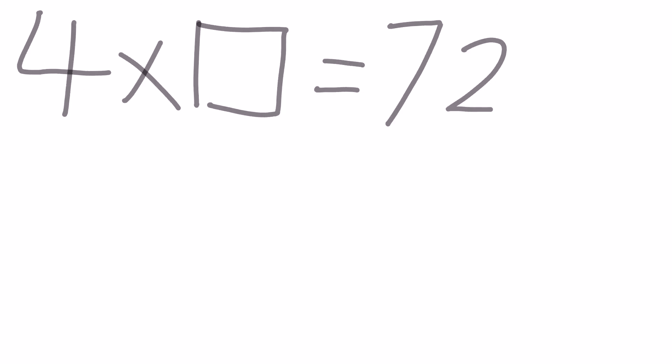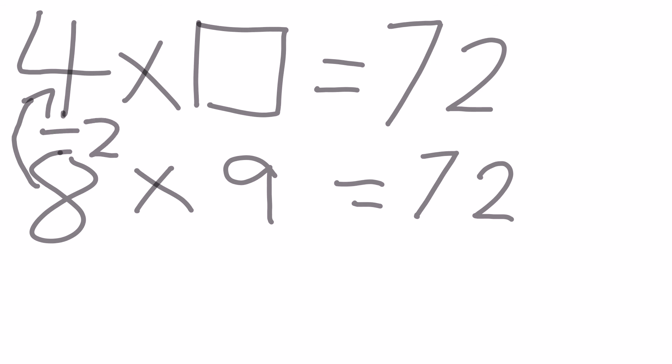One of the last strategies that we can use is our doubling and halving. If we know our basic facts, we may not know 4 times something equals 72, but we may know that 8 times 9 equals 72. If we look at the patterns, if we halve or divide by 2, just like our normal doubling and halving, we must do the opposite to the other side. So we must do 9 times 2, which equals 18.